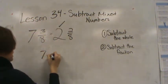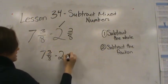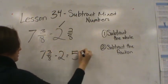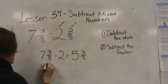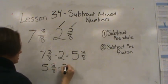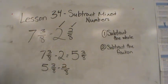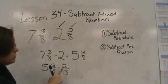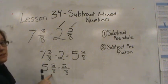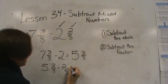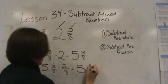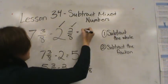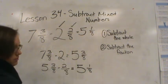Let's try another one: 7 and 3/8 minus 2 and 2/8. I'm going to subtract the fraction: 5 and 3/8 minus 2/8. I know I am not going to have to regroup because 2 is less than 3. I can take 2/8 from 3/8, so my whole will stay the same and 3/8 minus 2/8 is 1/8. So my final answer here is 5 and 1/8.